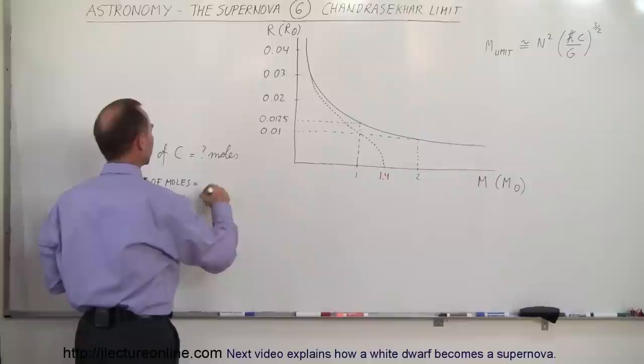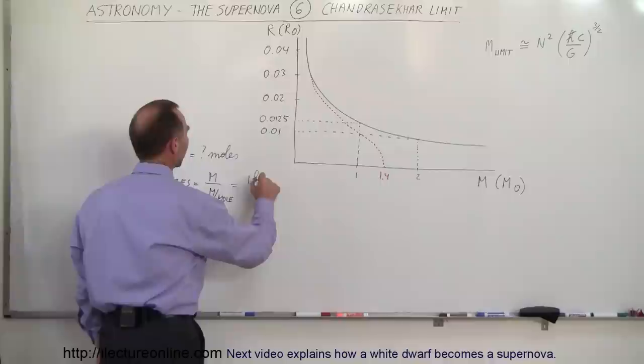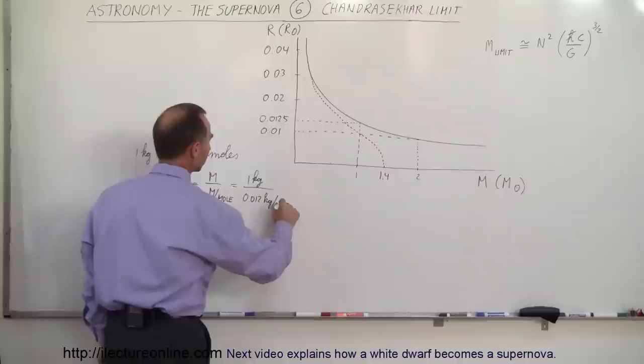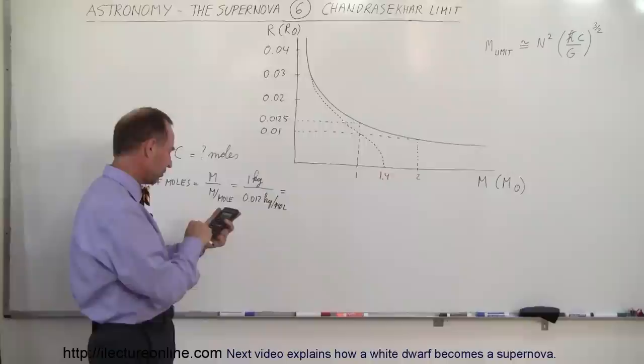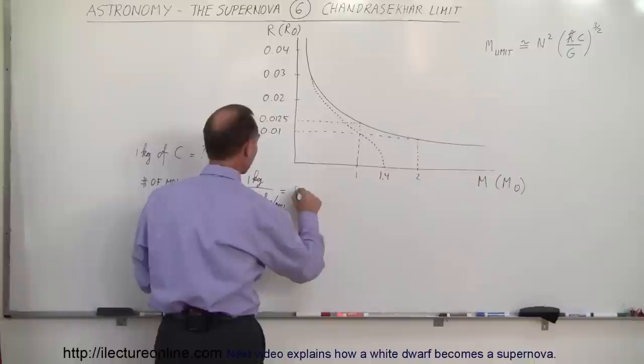The number of moles of carbon would be equal to the mass divided by the mass per mole. So if we take 1 kilogram and divide it by 12 grams, which is 0.012 kilograms per mole, we get 1 divided by 0.012, which equals 83.3 moles.